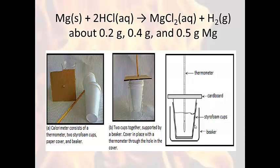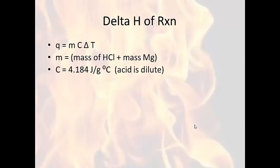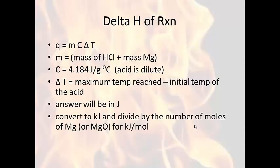Record the maximum temperature attained once the reaction is completed. If it were an endothermic reaction, you would record the lowest temperature — we're looking for the maximum change in temperature. To calculate the delta H, use Q = MCΔt, where mass is the mass of the acid plus the mass of the magnesium. Use the specific heat of water because the acid is dilute enough to make this assumption. Delta T is the maximum temperature reached minus the initial temperature. Your answer will be in joules; convert to kilojoules and divide by the number of moles of magnesium.